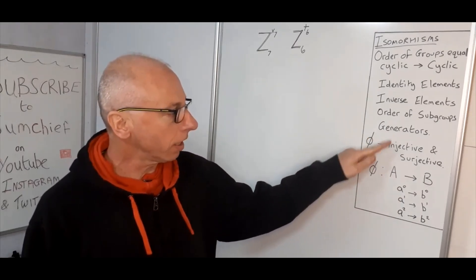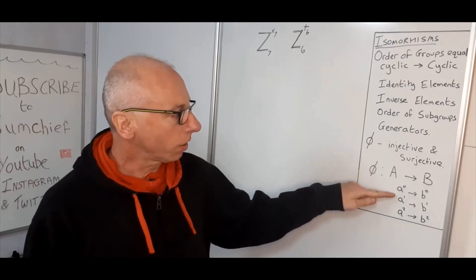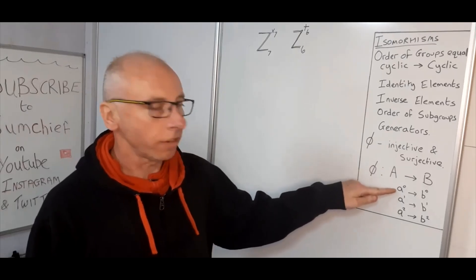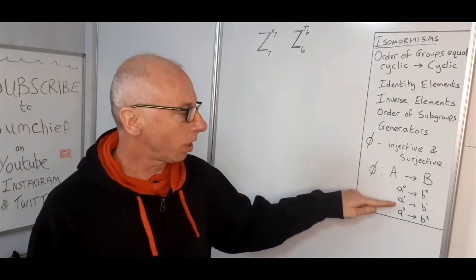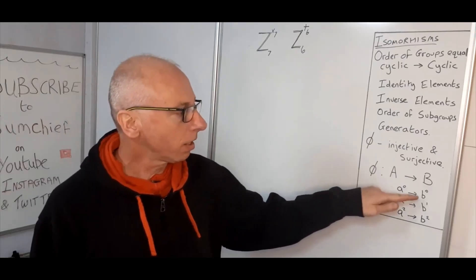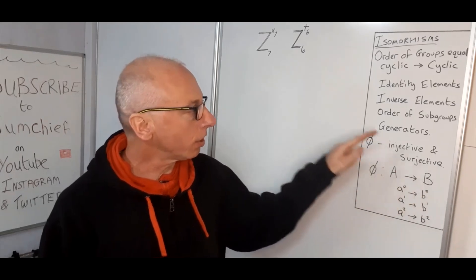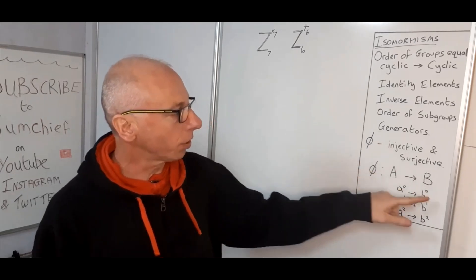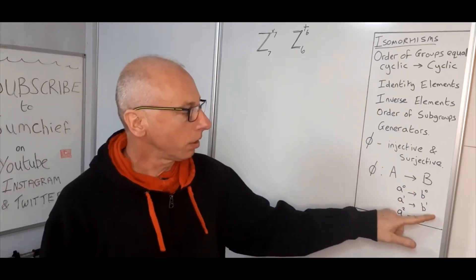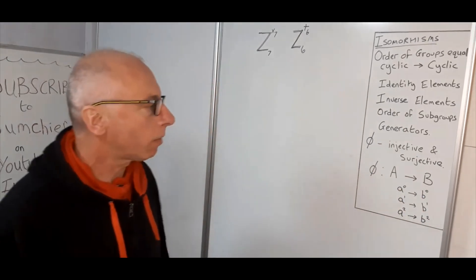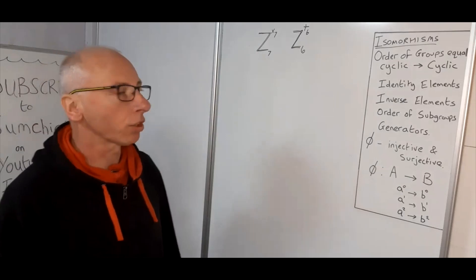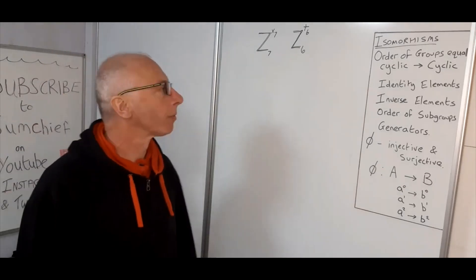When we find the generator, we map it from the generator of one group — zero, one, two — onto the generator of the other group — zero, one, two. That way we keep the structure of the group.